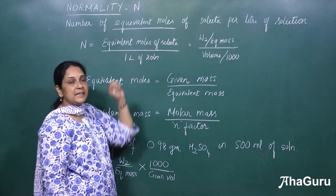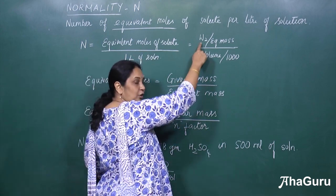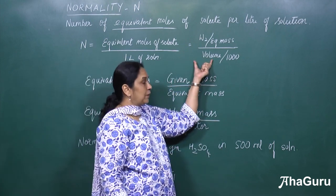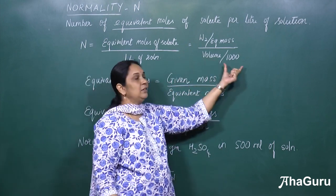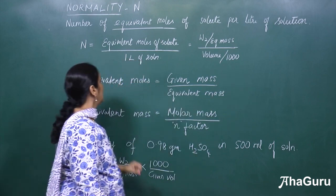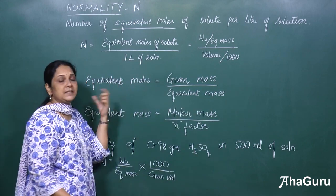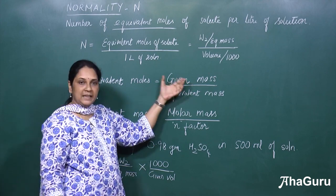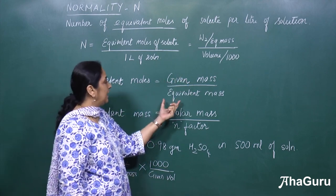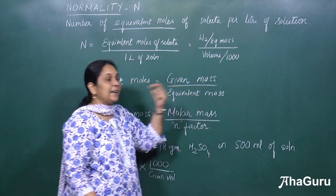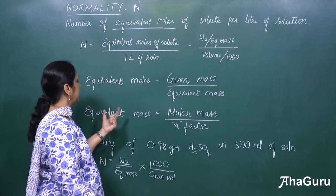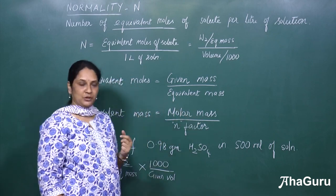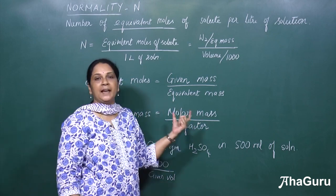So what are equivalent moles? It is the weight of the solute divided by the equivalent mass, per liter of the solution. Equivalent moles is the given mass of the solute divided by the equivalent mass. And what is equivalent mass? Equivalent mass is the molar mass of the solute divided by the N factor.